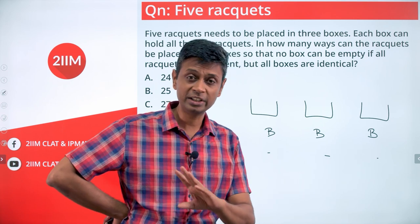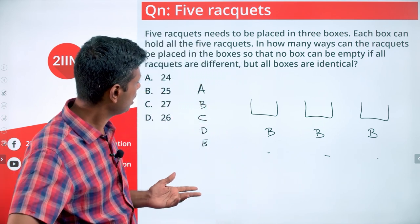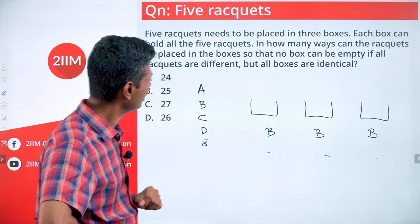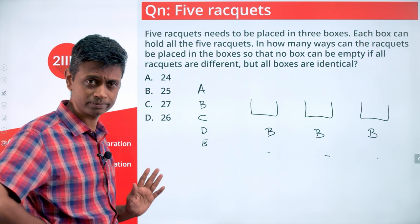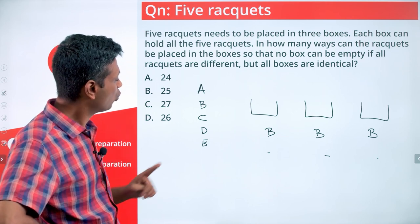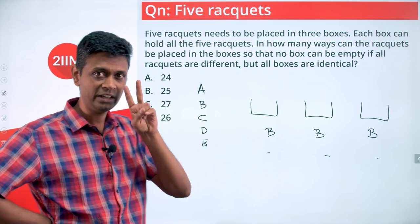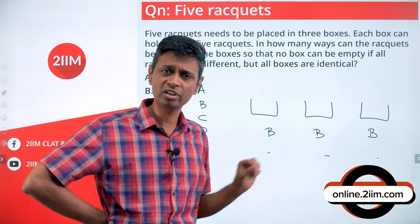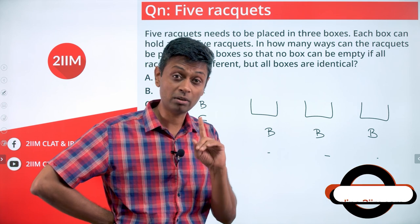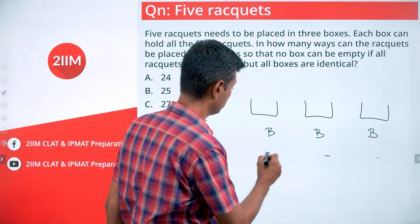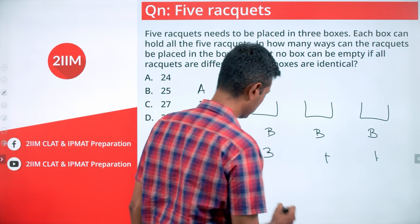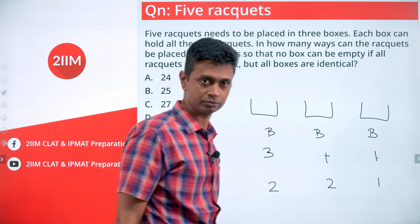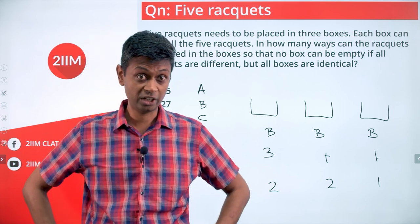The boxes are identical — keep that in mind. Think about the number of rackets that can go into the boxes. One-one-one is already accounted for; we have two remaining. I can put them as one and one, or both in the same box. So the distributions are 3-1-1 or 2-2-1.